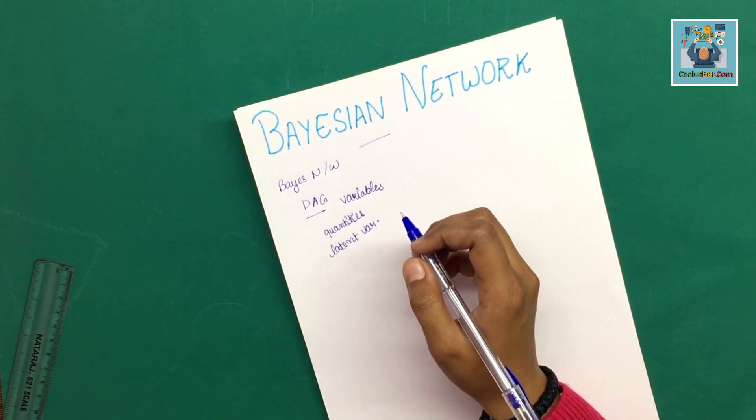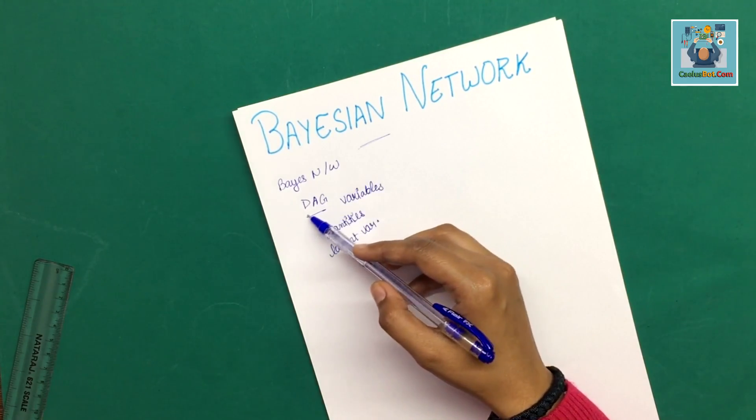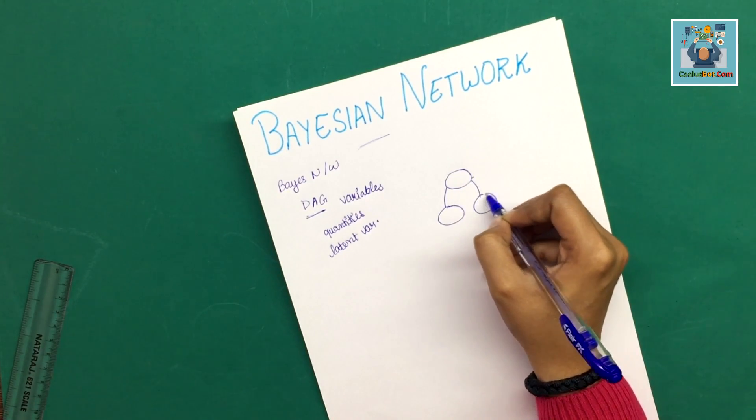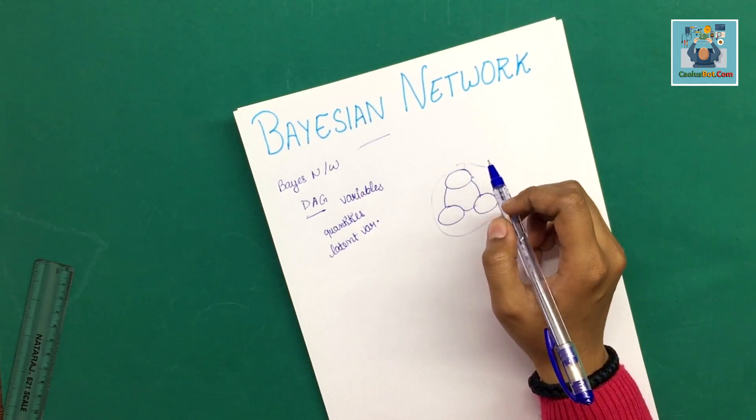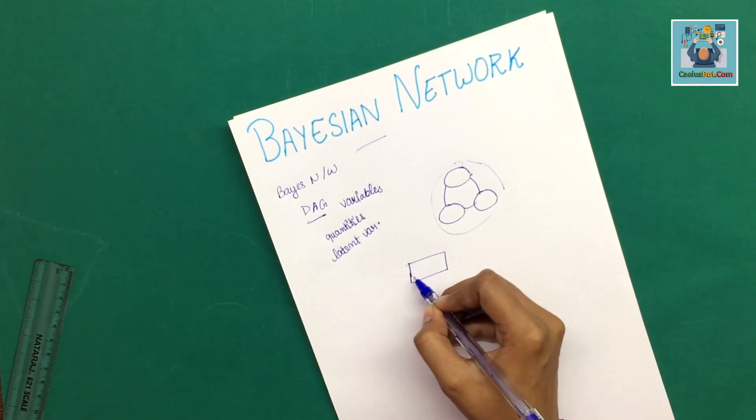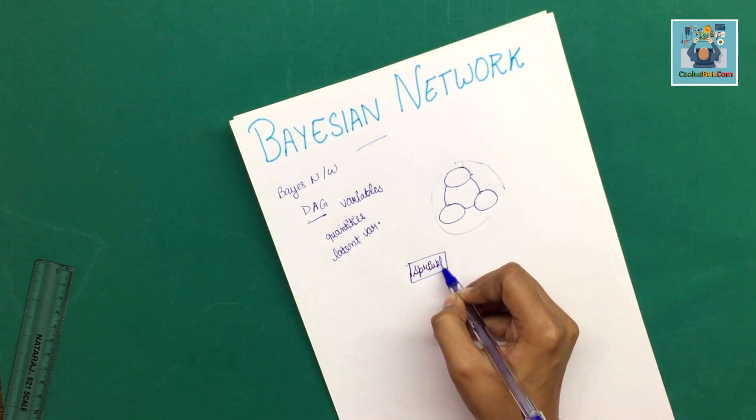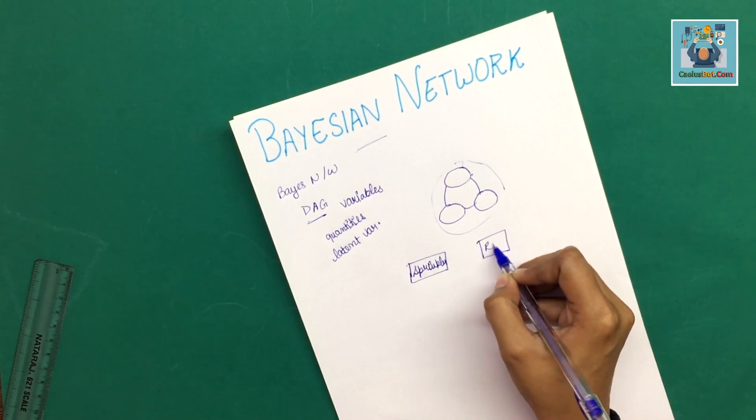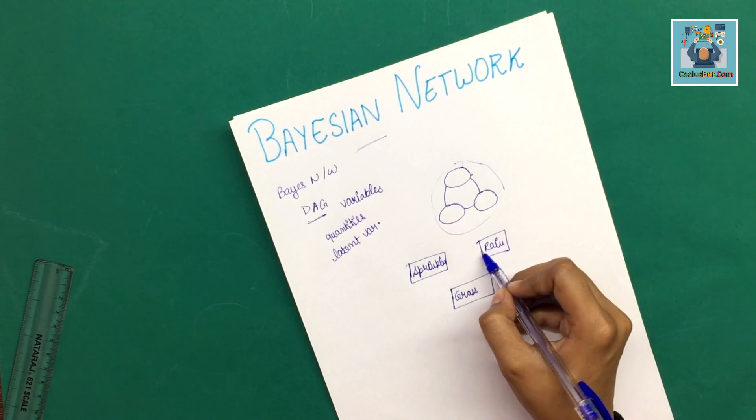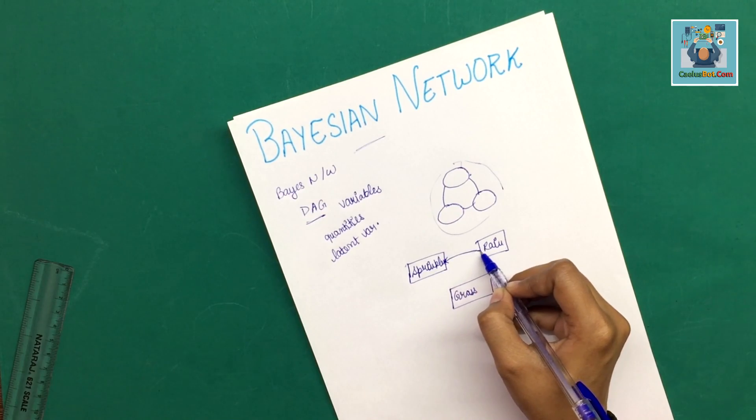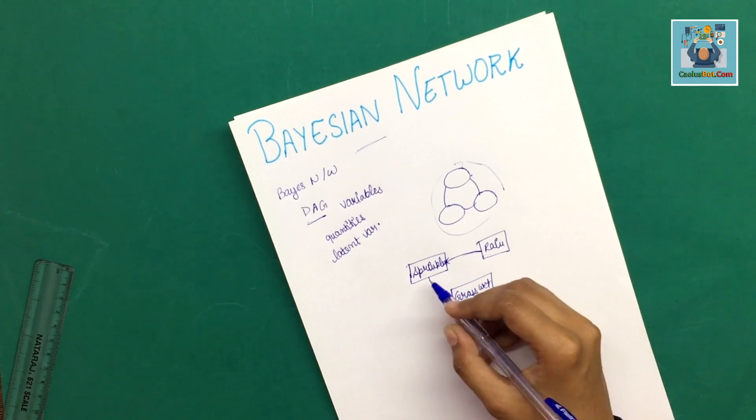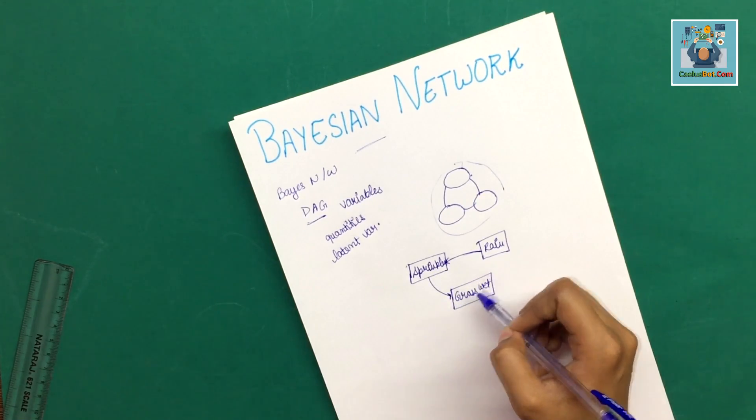This directed acyclic graph has nodes connected to each other. If we take an example: we have a sprinkler, here is rain, and here we have grass. So this is our Bayesian Network.